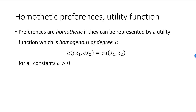The simplest way to visualize this is to use c equal to 2. If the utility function is homogeneous of degree one and the consumer doubles the consumption of each good, then utility will also exactly double.